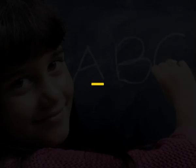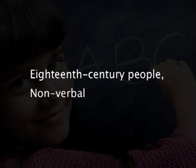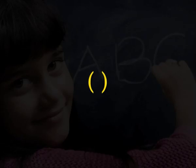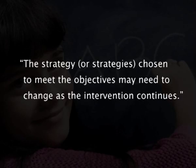The hyphen is used to join two words or separate phrase forms from the rest of a sentence — for example: '18th-century people' or 'non-verbal'. Brackets are used to keep extra information — for example: 'the strategy or strategies chosen to meet the objectives may need to change as the intervention continues.' Here 'strategies' is used in brackets to show less importance. This is the end of the presentation.